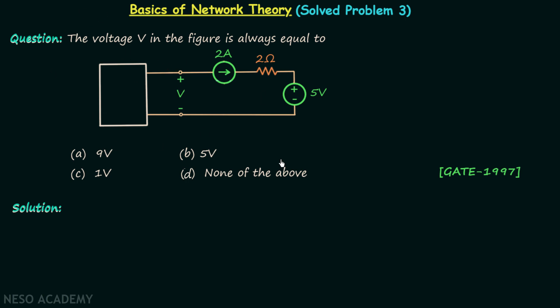I have taken this question from GATE 1997 Electronics and Communication Engineering exam. In this question we are required to find out the voltage V, which is the potential difference across this point and this point.